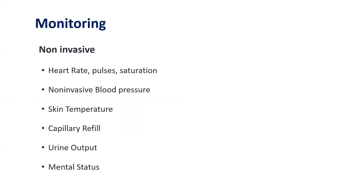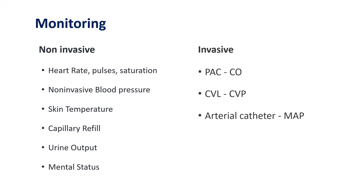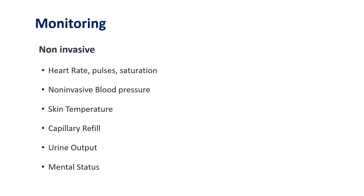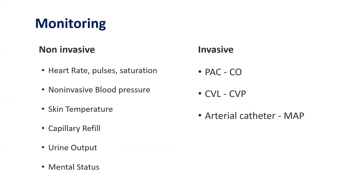Invasive monitoring can be done by various catheters. A pulmonary artery catheter can measure cardiac output and various other parameters. A central venous line can help measure central venous pressure, and an arterial catheter can help measure mean arterial pressure.